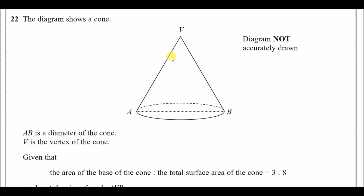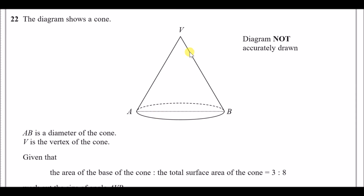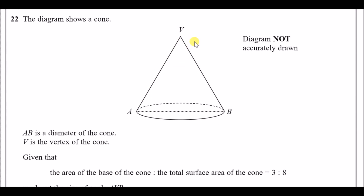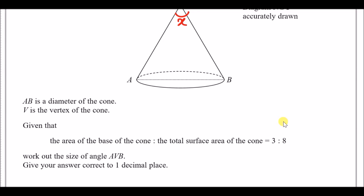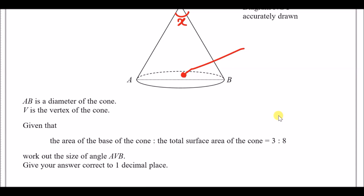Question 22: The diagram shows a cone, and the relevant formulas are given in the front of the booklet. AB is the diameter of the base and V is the vertex at the top. Given that the area of the base to the total surface area is in the ratio 3 to 8, we need to find the angle AVB.